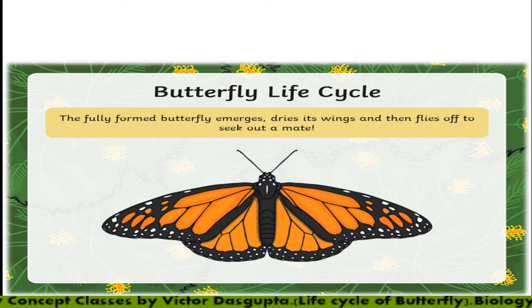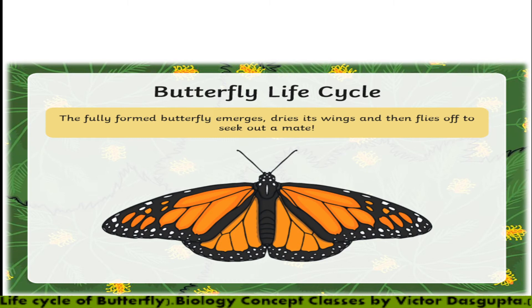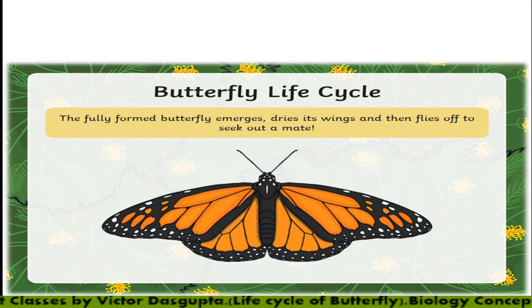Before it starts flying, it needs to flow blood into its wings. Here you can see the wings are spread. When they first emerge from the pupal cage, the wings will be curled; afterwards they take the shape of a wing by flowing blood. Insect blood does not have any blood pigments — the blood is colorless, like water.